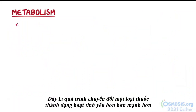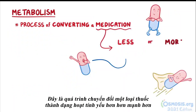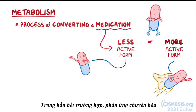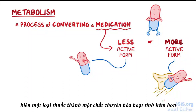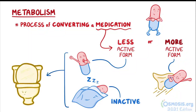Let's focus on the metabolism. This is the process of converting a medication into a less or more active form. These forms are also known as metabolites. In most cases, metabolic reactions turn an active medication into a less active or inactive metabolite, which is then ready to get excreted.